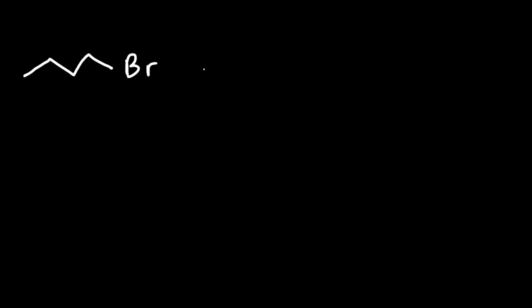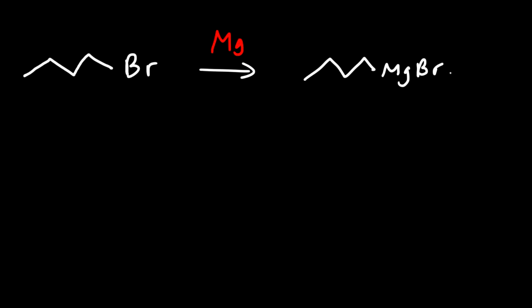In this video, we're going to focus on reactions associated with the Grignard reagent. Let's talk about how to make it. If we have 1-bromobutane and react it with magnesium metal, magnesium will insert itself between the carbon and bromine atoms, giving you a Grignard reagent.